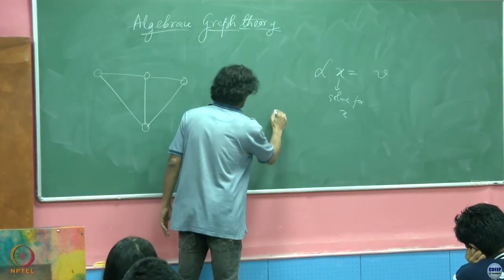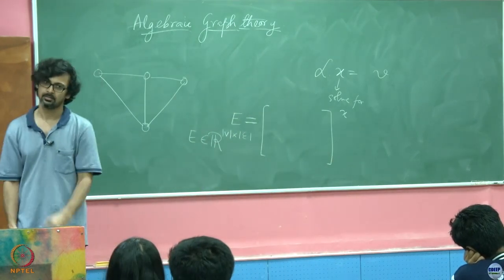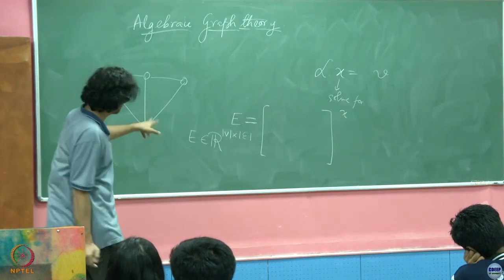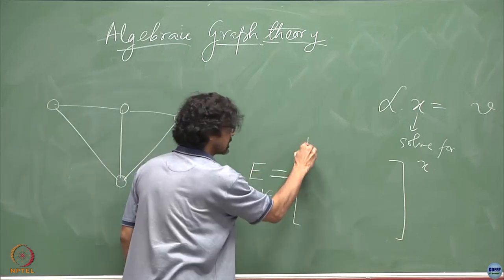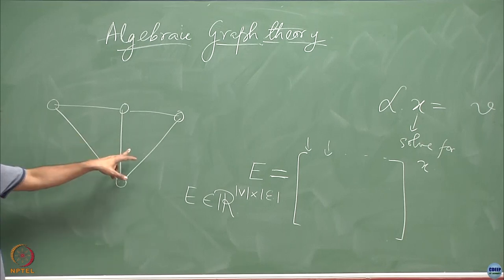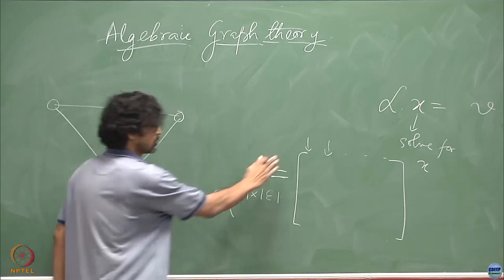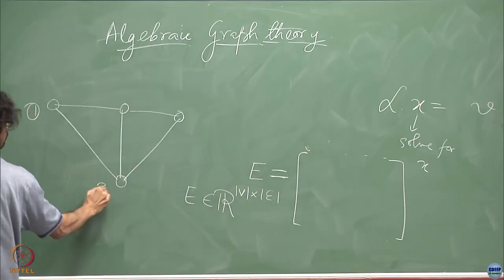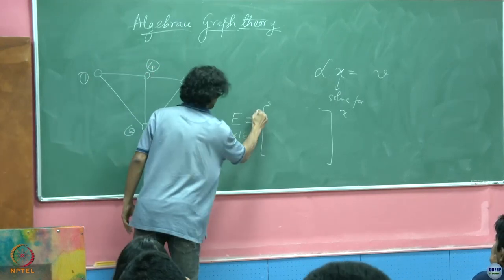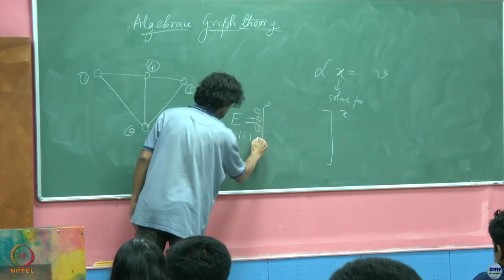The incidence matrix admits three numbers: 0, 1, and minus 1. Every column corresponds to an edge and every row corresponds to a vertex. For this graph, there are 4 vertices, so there are 4 rows, labeled 1, 2, 3, and 4 — the first row for vertex 1, second for vertex 2, third for vertex 3, fourth for vertex 4.